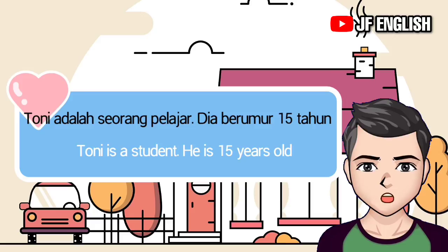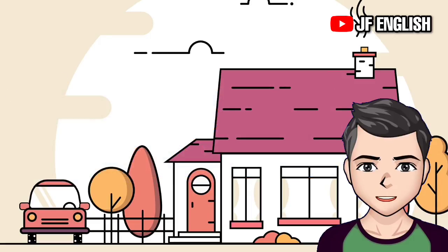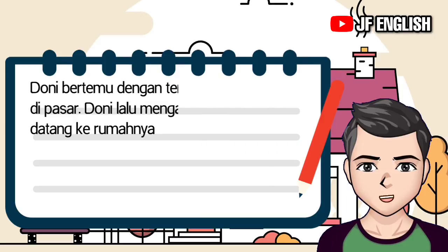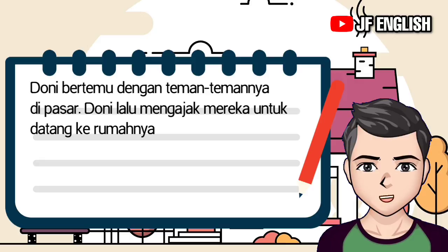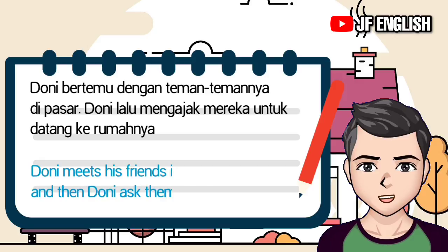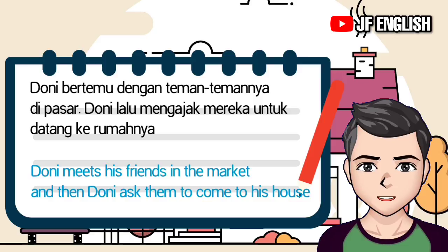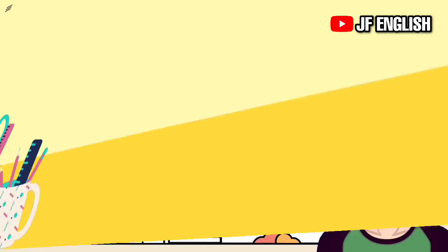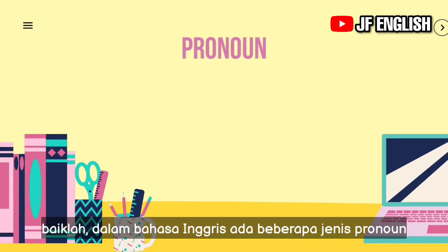Dalam kalimat tersebut, kata 'dia' merupakan pronoun — menggantikan kata Tony pada kalimat sebelumnya. Contoh kedua: Donnie meets his friends in the market, and then Donnie asks them to come to his house. Kata 'mereka' atau 'them' pada kalimat kedua merupakan kata ganti atau pronoun, fungsinya menggantikan kata teman-temannya. In English, there are several kinds of pronouns.